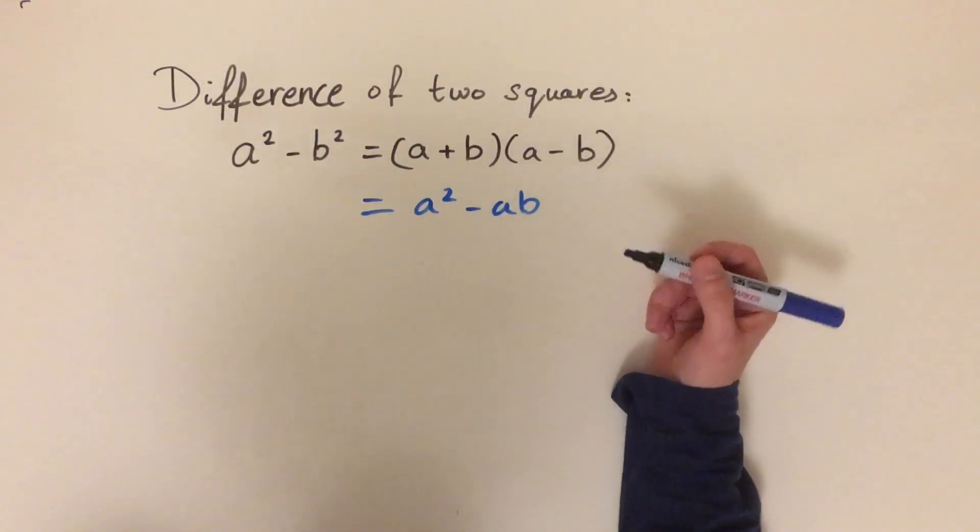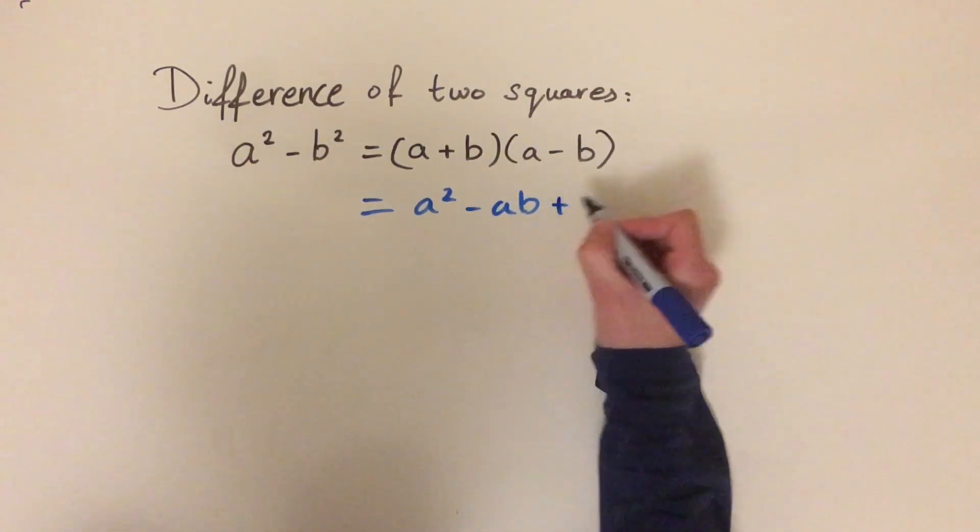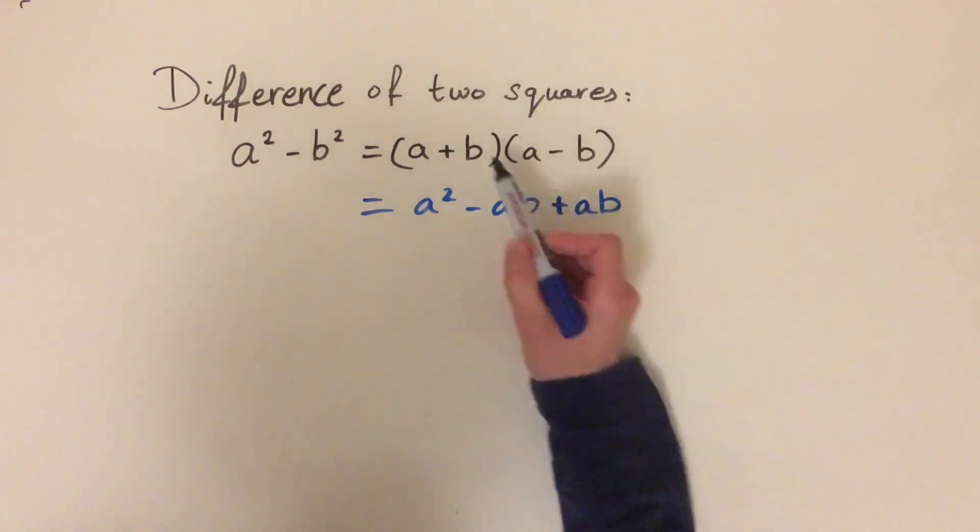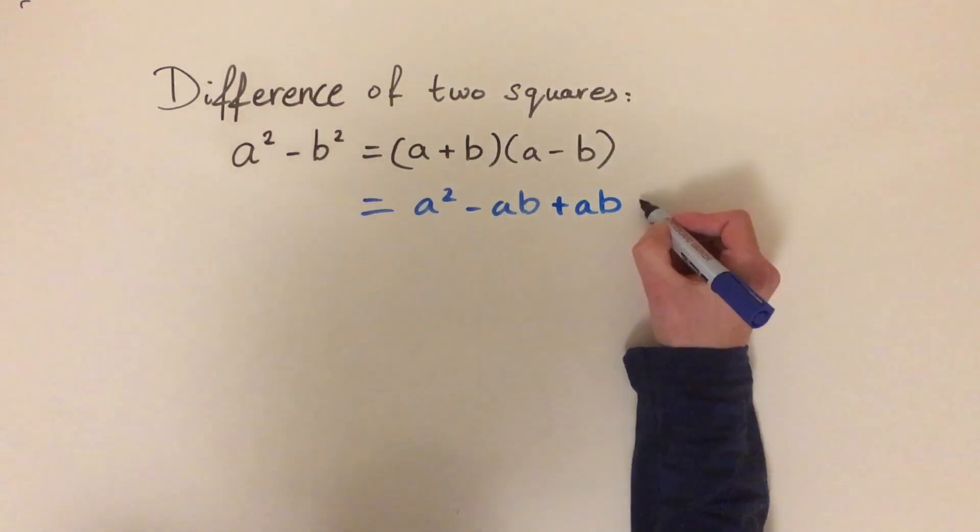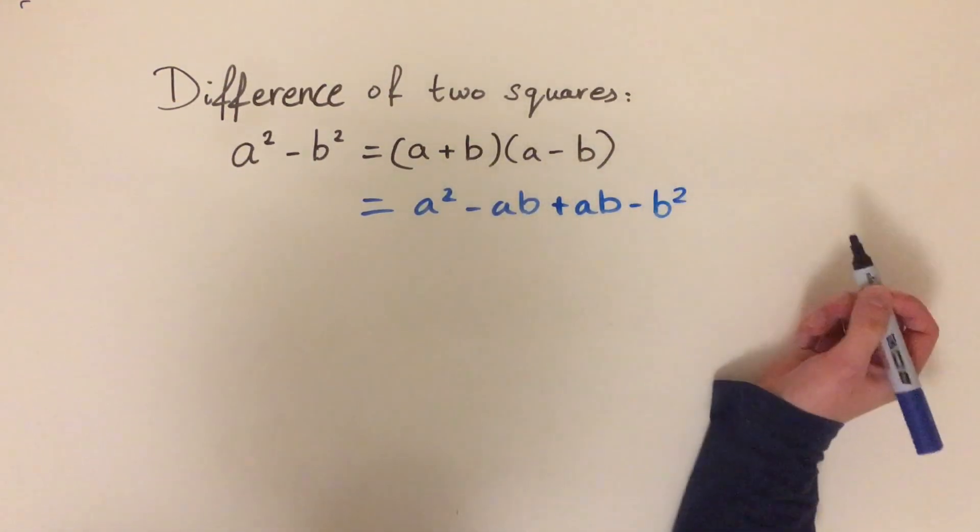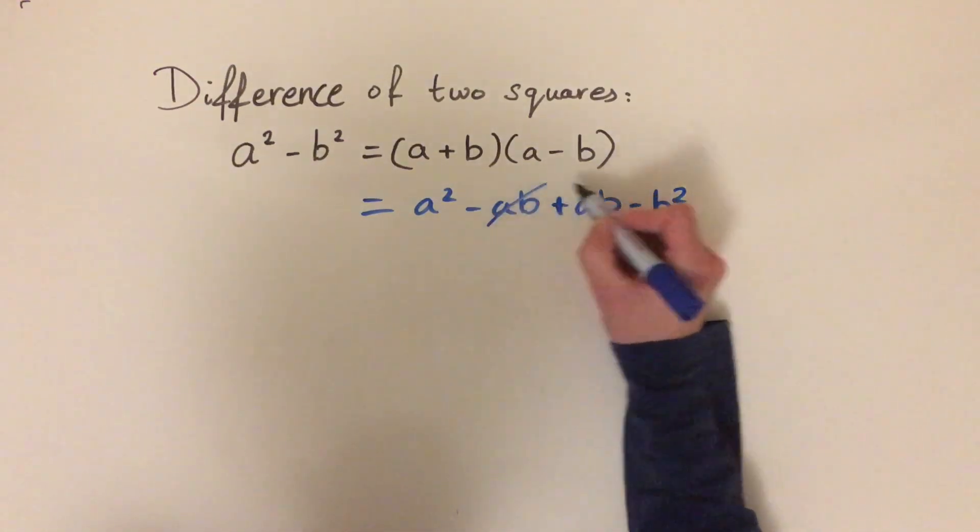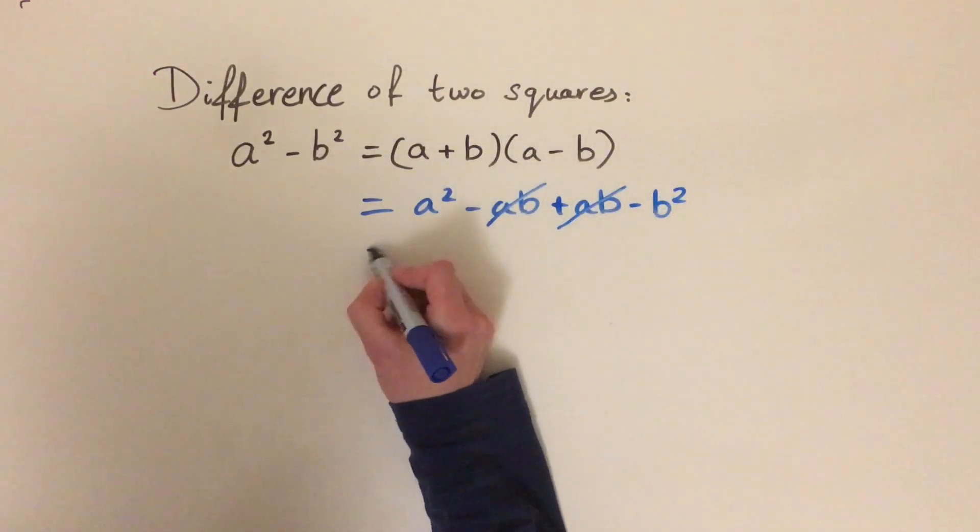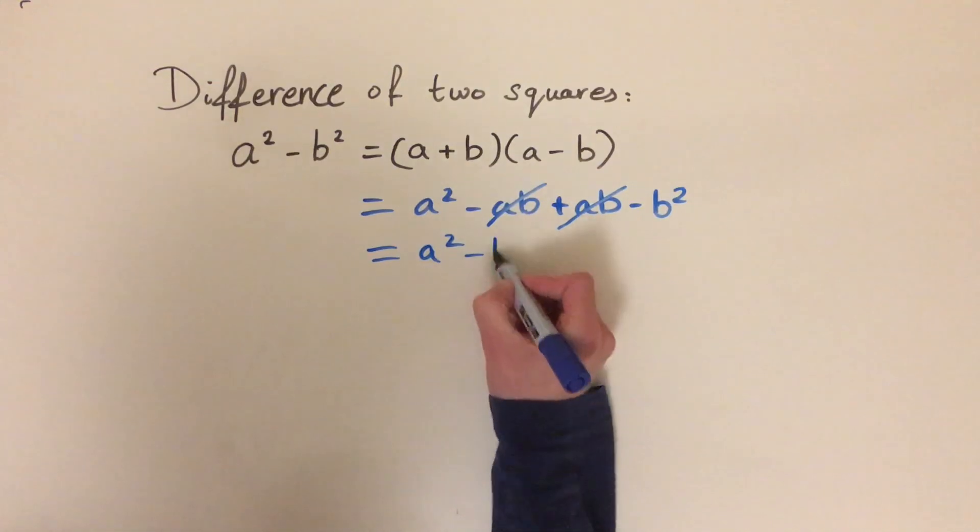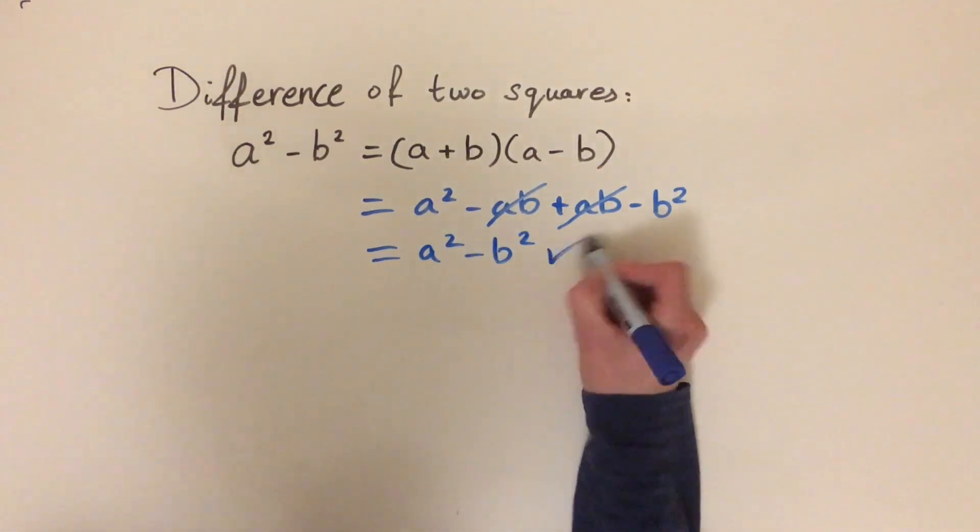b times a is the same as a times b. So let's add on plus ab. And b times minus b, that is minus b squared. And you can see that the ab's cancel out. So we're left with a squared minus b squared. And this is what we want, so this is correct.